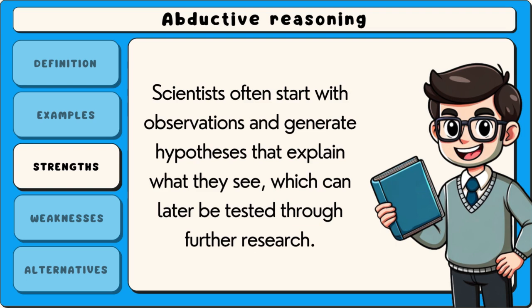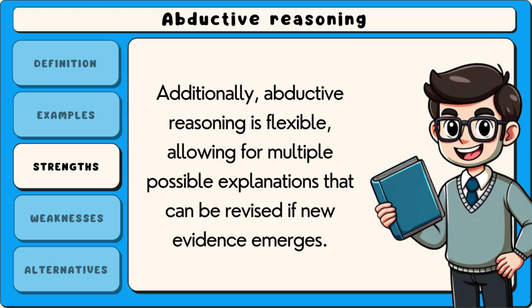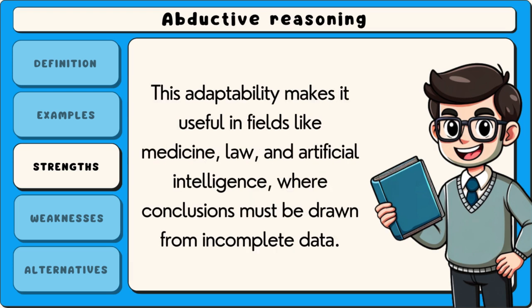These hypotheses can later be tested through further research. Additionally, abductive reasoning is flexible, allowing for multiple possible explanations that can be revised if new evidence emerges. This adaptability makes it useful in fields like medicine, law and artificial intelligence, where conclusions must be drawn from incomplete data.